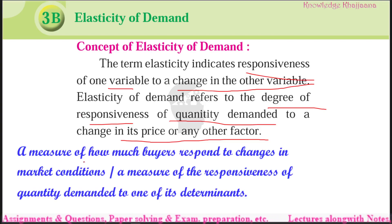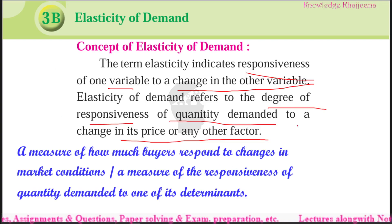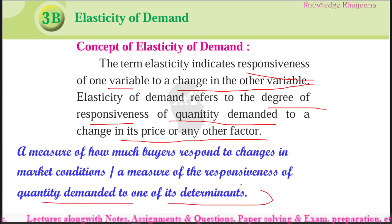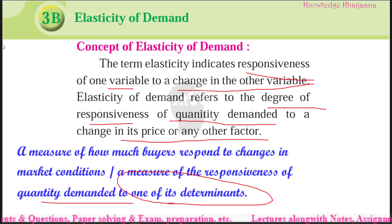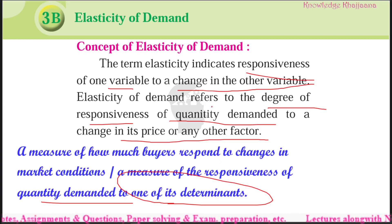A measure of how much buyers respond to change in the market conditions — that is a measure of the responsiveness of quantity demanded to one of its determinants. The determinants we are going to see are price, income, and other determinants, that is substitute goods. Elasticity is a concept that measures the responsiveness of one variable to changes in another. The variables in this context are price and income with quantity demanded.